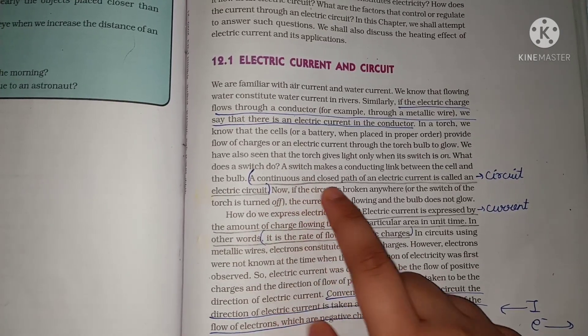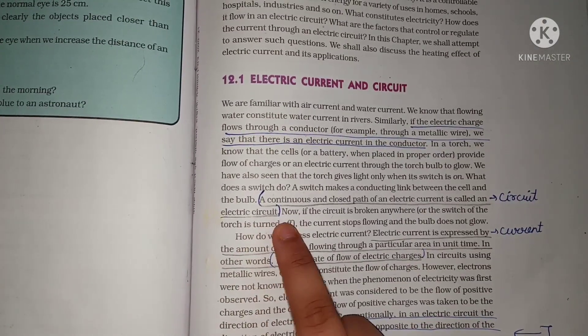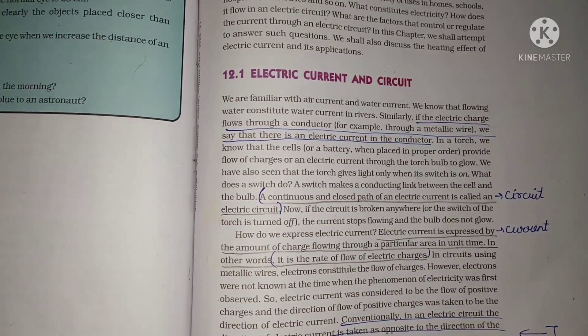Now, electric circuit. A continuous and closed path of an electric current is called an electric circuit. So, these were two definitions, this was all about this topic.